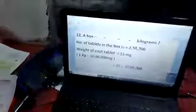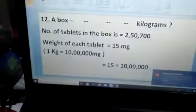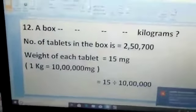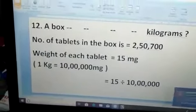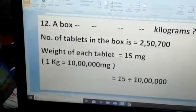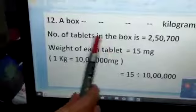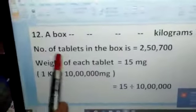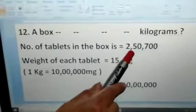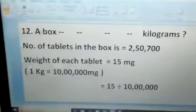Once again, hello everyone. Coming to question number 12. Please have a look. I am reading the question for you. A box contained 2,50,700 tablets. It is given in word form 2,50,700 tablets. There is a box in which tablets are there. The number of tablets in that particular box is 2,50,700.